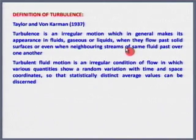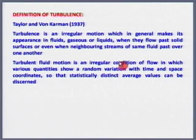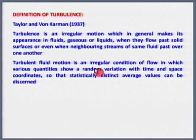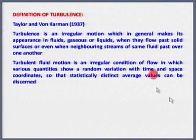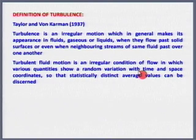Turbulent fluid motion is an irregular condition of flow in which various quantities show random variation with time and space coordinates, such that statistically a distinct average value has to be discerned.